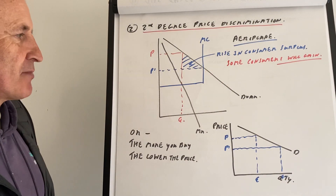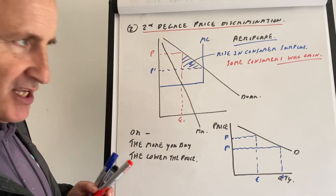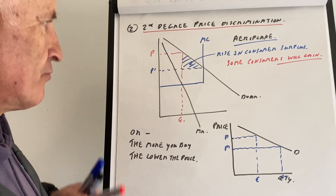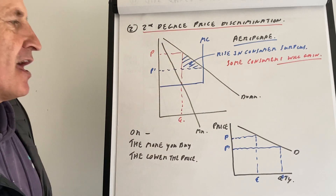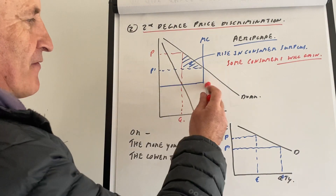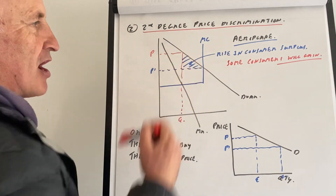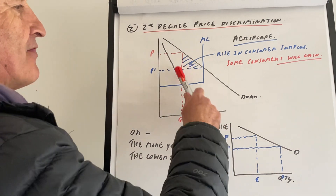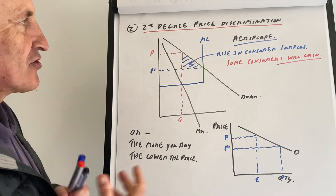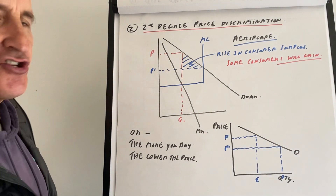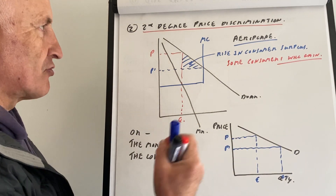We also have second degree price discrimination. This is the one that the Econ diagram showed — if you have an aeroplane, you produce where MR equals MC, and that is the price you charge. However, you may also have maybe 50 percent of the aeroplane free, so you charge people a lower price. This results in rising consumer surplus, which is a welfare gain. Some consumers gain from having a lower price. Alternatively, second degree price discrimination can mean the more that you buy, the cheaper the price will be.